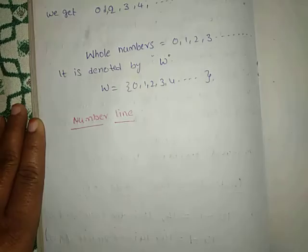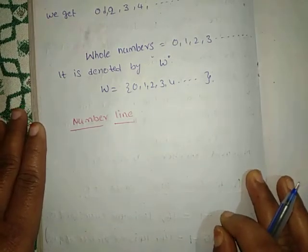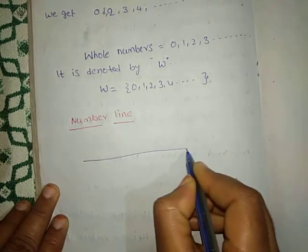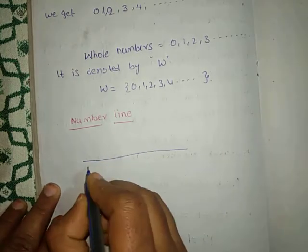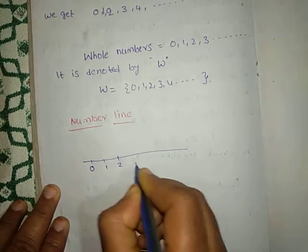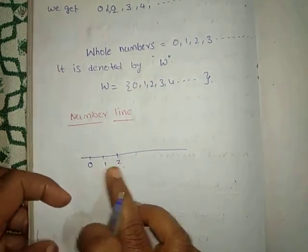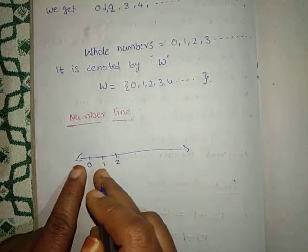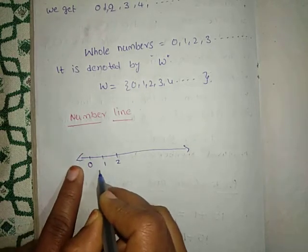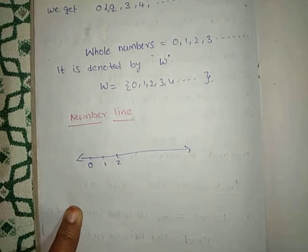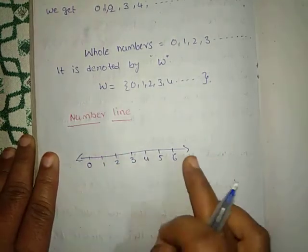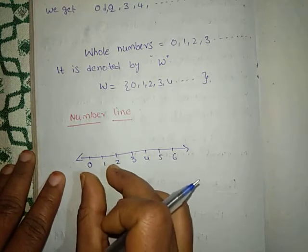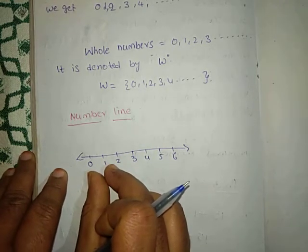Now let us see the next topic: the number line. The number line means we take a line and indicate the numbers on it. Since whole numbers start from 0, the number line starts from 0. The distance from 0 to 1, from 1 to 2, and so on is the same — this distance is called 1 unit.